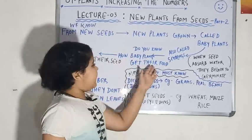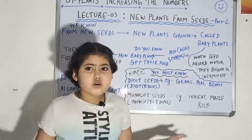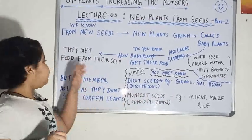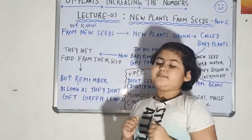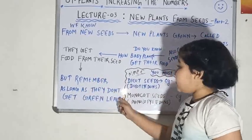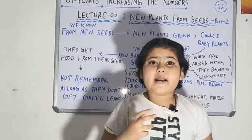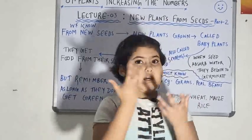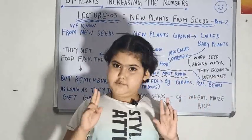Now let's move on to this. Do you know how baby plants get their food? Yes. Now we know. But before that we didn't know. Now we know that they get food from their seed. But remember that as long as they don't get green leaves. As long as a particular plant doesn't grow a green leaf, it takes its food from its seed leaves.